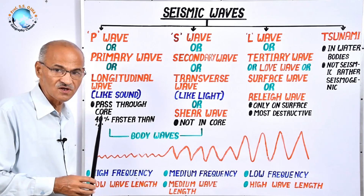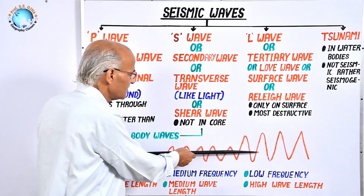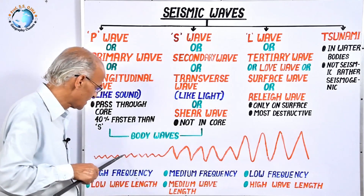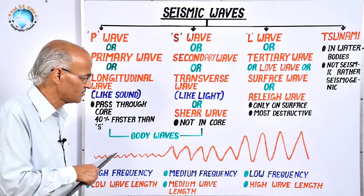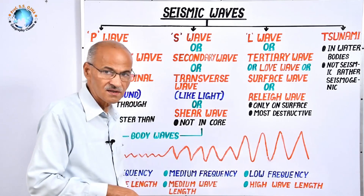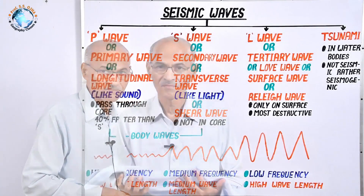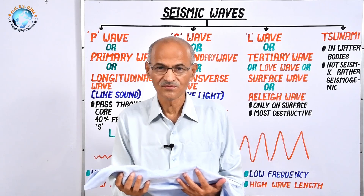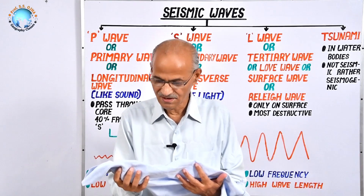Wave magnitude or amplitude is the deviation from normal — the up and down deviation. P waves have low amplitude or magnitude, S waves have medium amplitude, and L waves have very high amplitude, which means these waves will be most destructive.